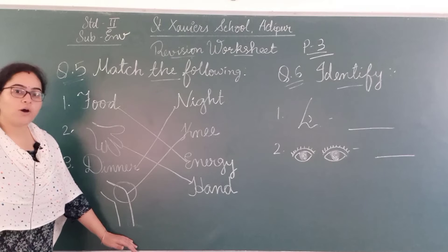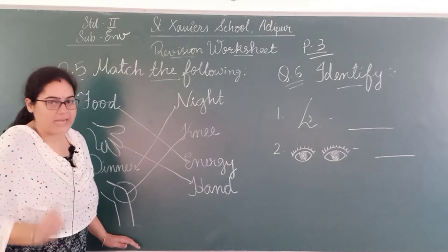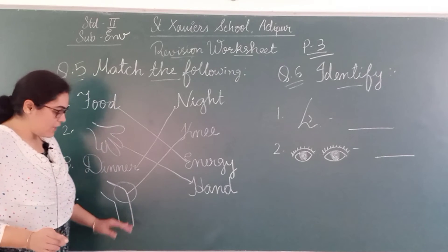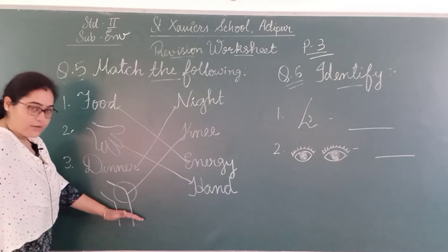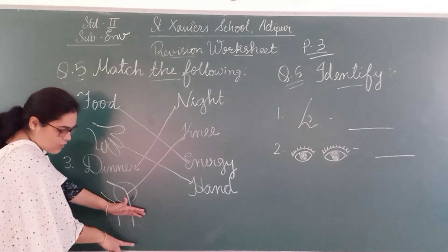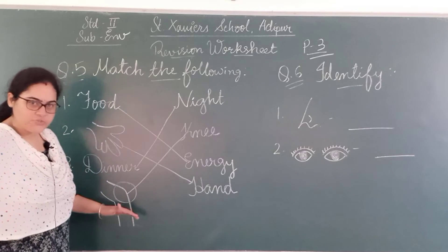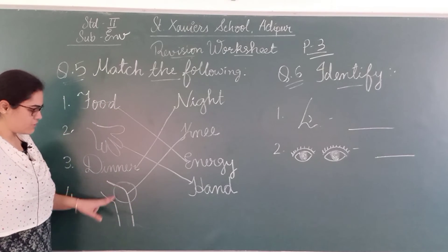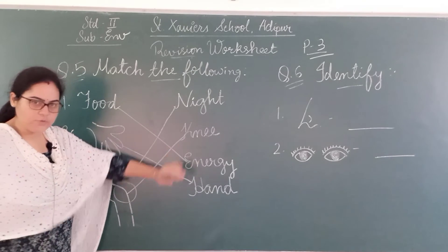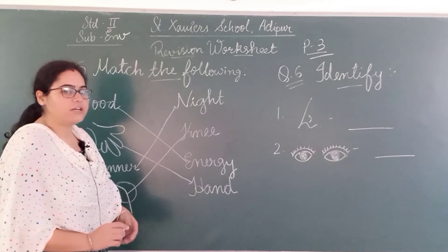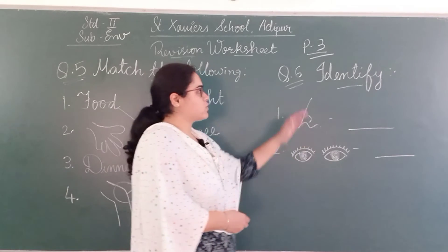If the full leg is showing, you have this upper part and down the foot. So what will we write? We will write 'legs'. This downward part is showing, so we will write 'foot'. And this middle part is showing, so we will write 'knee'. We have already done this in our chapter.